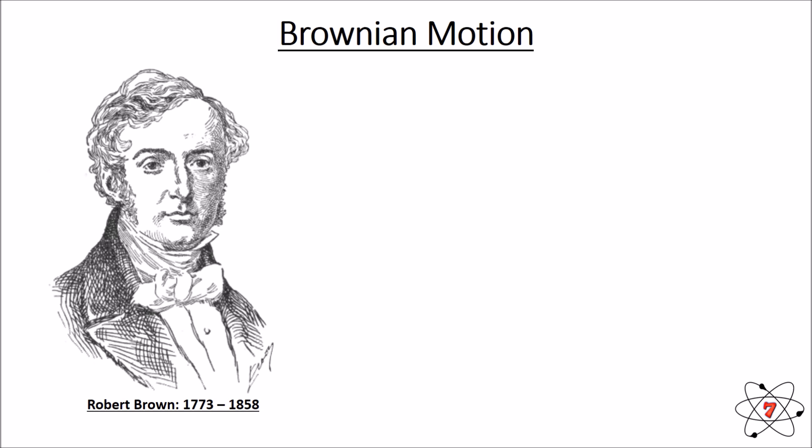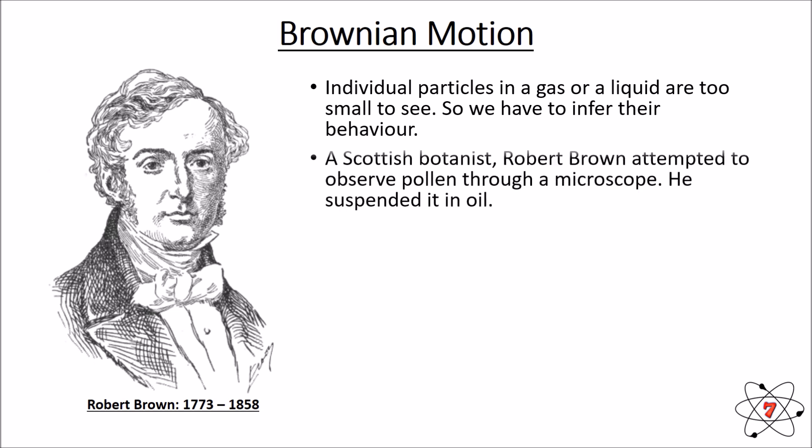The movement of particles and diffusion can be described as something called Brownian motion. So individual particles in a gas or a liquid are too small to see. We have to infer their behavior. We have to work out what they're doing.